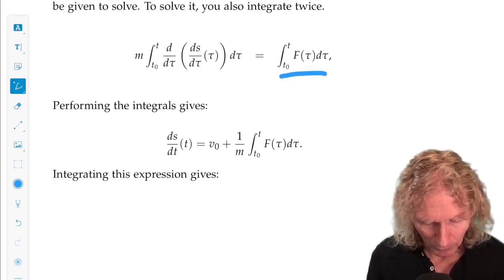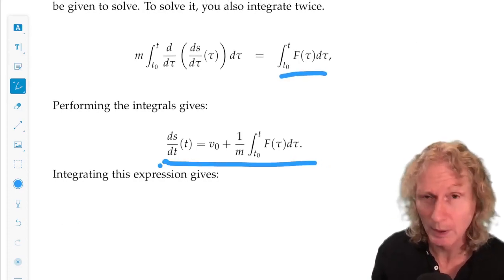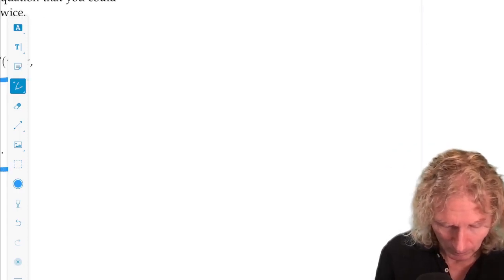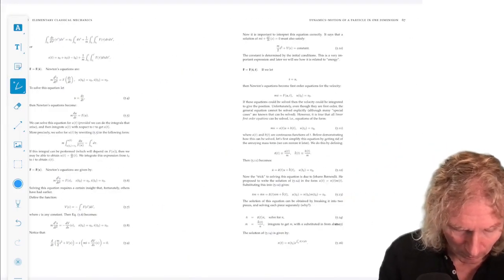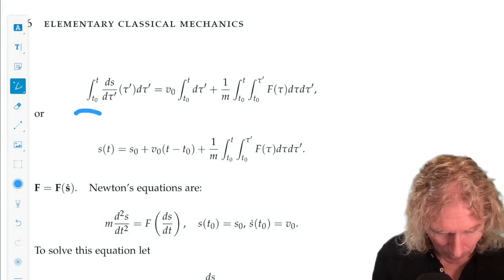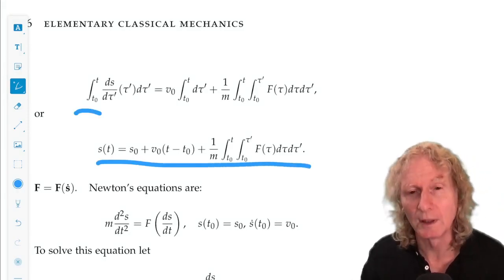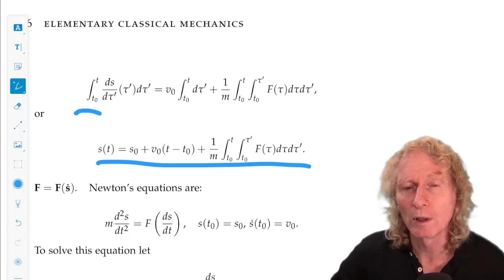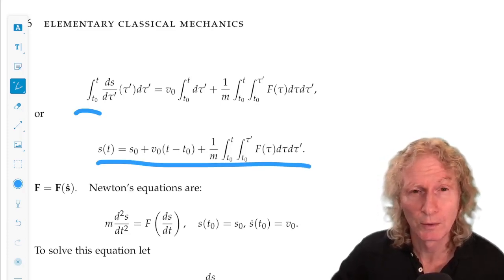So, performing the first integration gives us this. Compare with the previous case. And the second integration gives us this. And you can see how if f were a constant, it would reduce to the previous case.